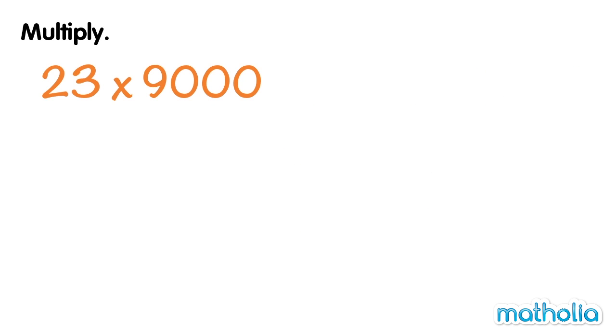Find 23 times 9,000. 9,000 is equal to 9 times 1,000.